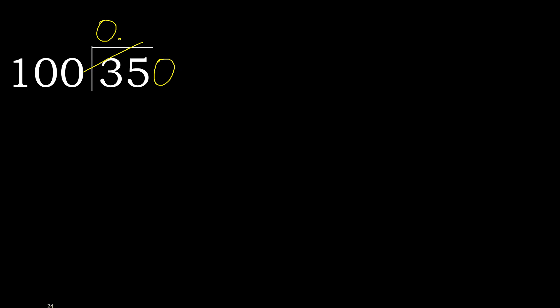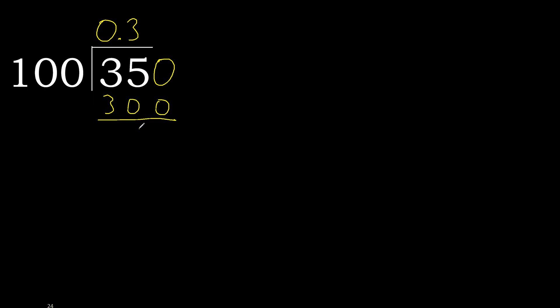But not greater. 100 multiplied by 4 is 400 — 400 is greater. 100 multiplied by 3 is 300, which is not greater. Subtract.